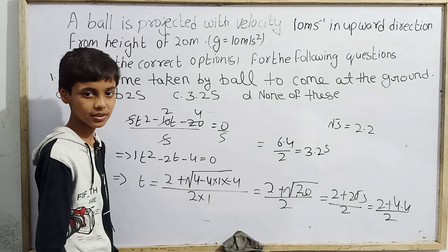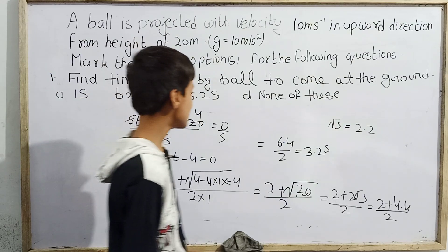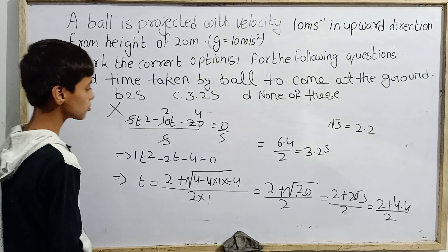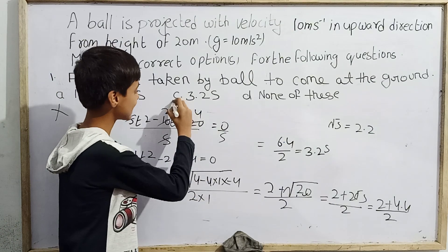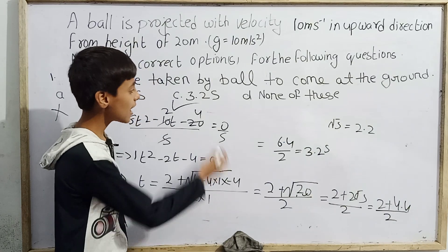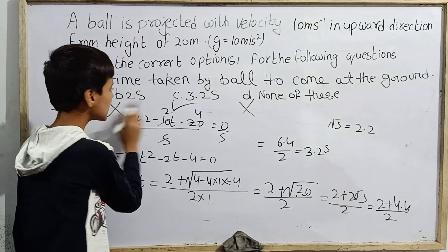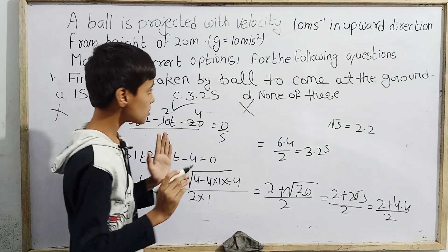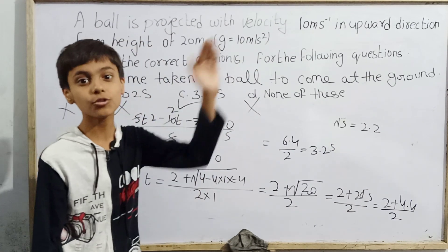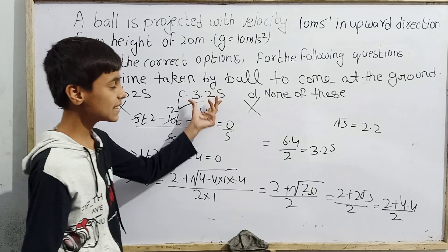You can also verify this by the splitting-the-middle-term method; it also gives 3.2 seconds. Checking the options: 1 second is wrong, 2 seconds is wrong, 3.2 seconds matches our calculation — so option C is 100% correct. Option D (none of these) is also wrong because our answer matches option C. So options A, B, and D are wrong, while option C is correct.